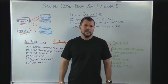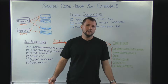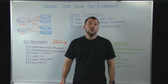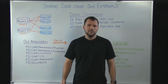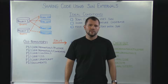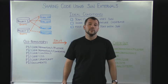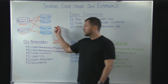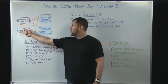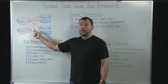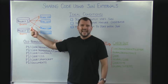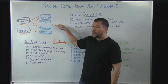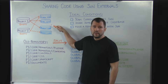First, let's define what an SVN external is for reference. An SVN external is a property of Subversion that allows you to configure a repository as a composition of other repositories. Referencing the drawing here, I have a project one repository, and that repository is actually empty, but it is referring to three other repositories in my architecture.